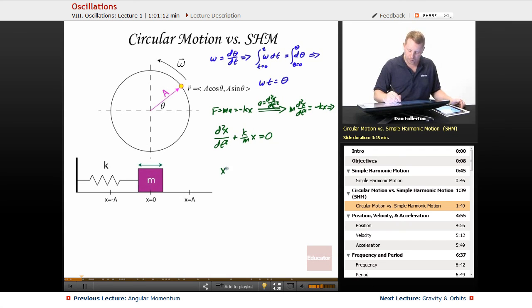So the general form of our solution, x as a function of time, is given by a, our amplitude cosine omega t. Where we're going to find omega is the square root of k over m, or if we look here in our equation, that piece right there, that is omega squared. Let's take it a bit further as we look at...